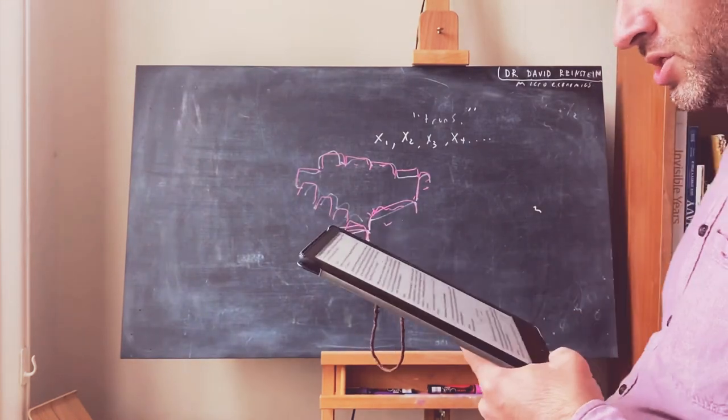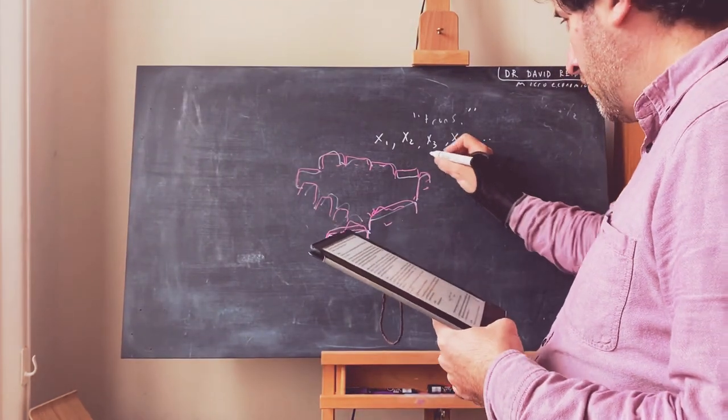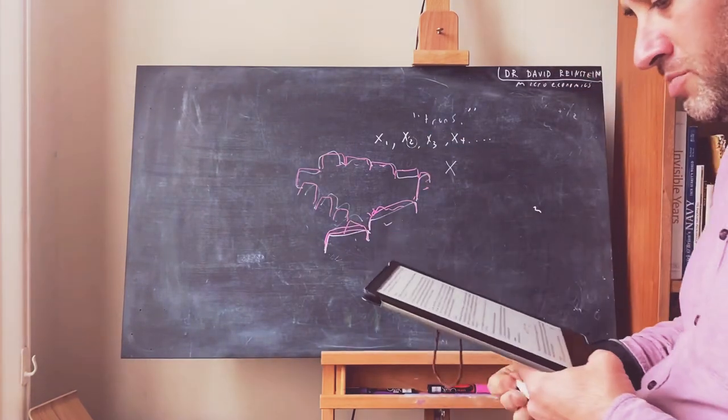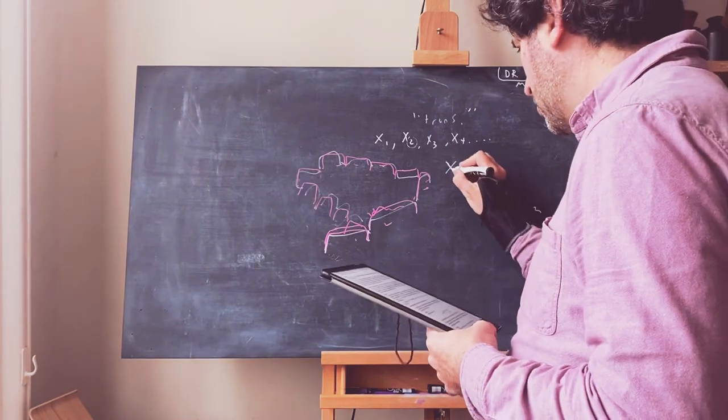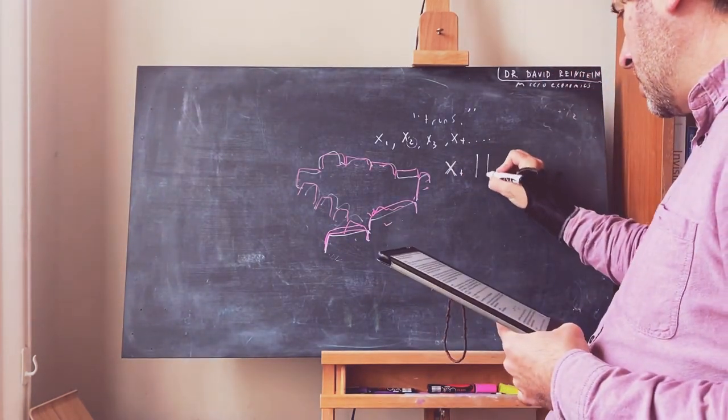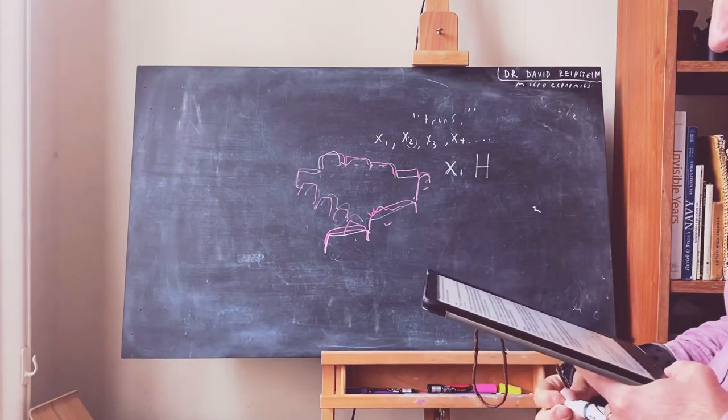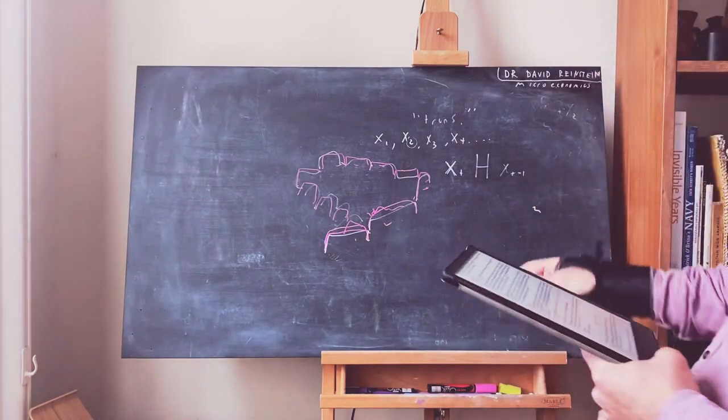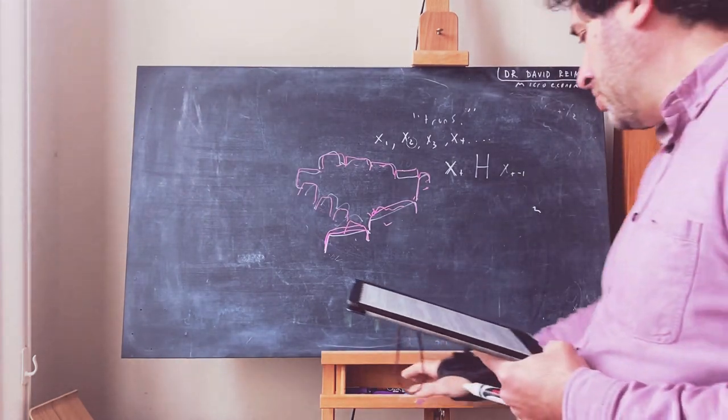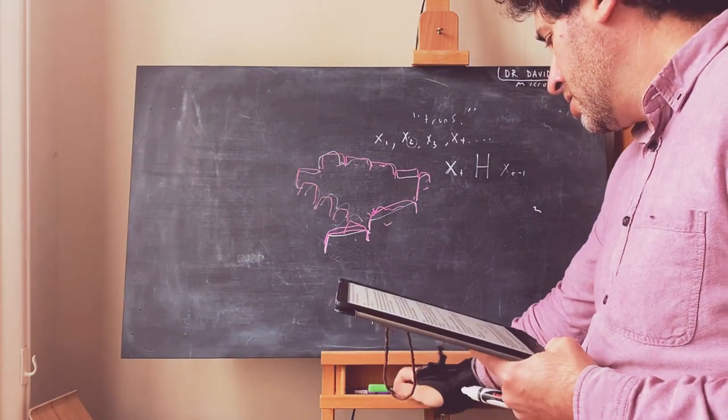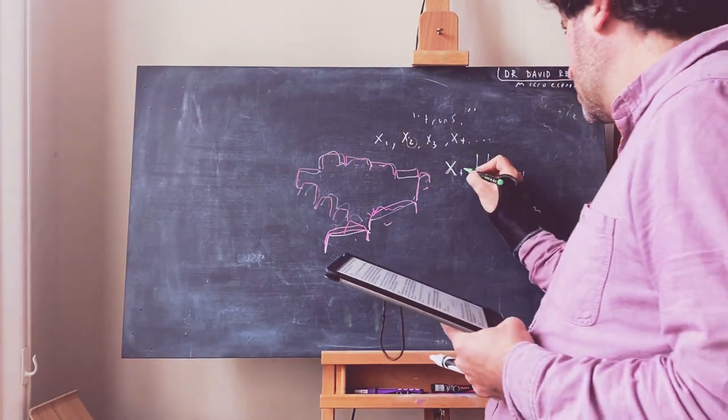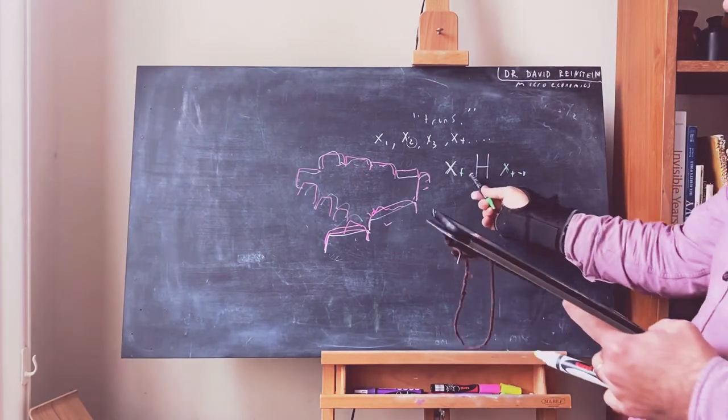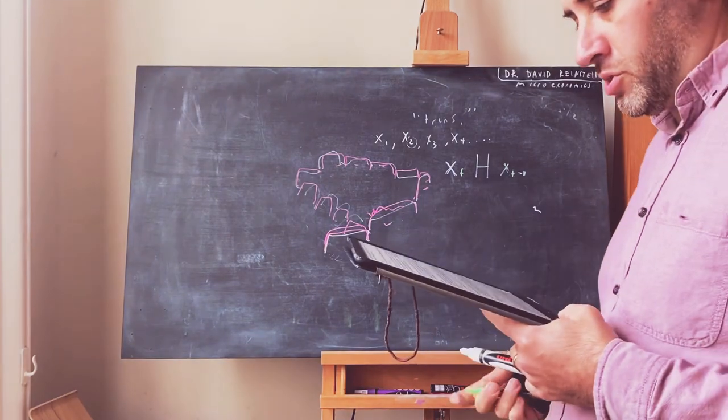We have the case it appears that for any value xt, where t is the subscript, it appears to be the case that xt H xt minus one, where xt minus one is the note that was played a second ago. So it appears that one note—if we consider h the relationship appears to be higher—every note appears to be higher than the prior note.